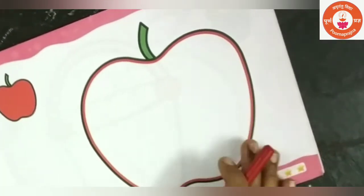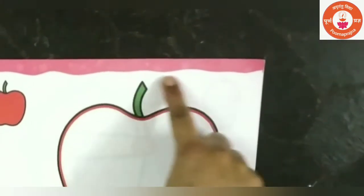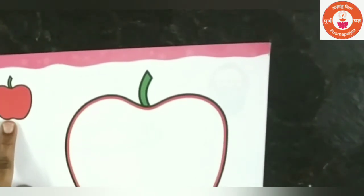Now help the child to color this apple. See children, what is this? This is an apple. What is this? This is an apple. See, apple is in which color? Correct. Apple is in red color.